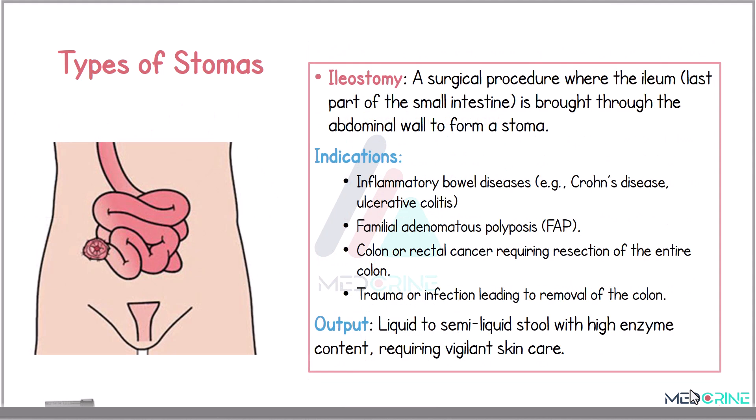The next type of stoma is known as ileostomy. An ileostomy is a surgical procedure where the ileum, or the last part of the small intestine, is brought through the abdominal wall to form a stoma. Common indications include inflammatory bowel disease — for example, Crohn's disease and ulcerative colitis — familial adenomatous polyposis, colon or rectal cancers requiring removal of the entire colon, and trauma or infection leading to removal of the colon.